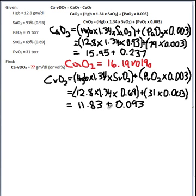And I get 11.83 plus 0.093, and then adding those together, I get a venous content of 11.93 volumes percent.